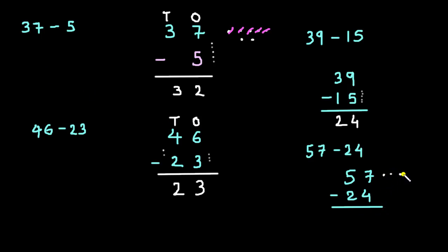Drawing 7 dots: 1, 2, 3, 4, 5, 6, 7. And cut 4 dots: 1, 2, 3, 4. We are left with 3. So, answer is 3. 7 minus 4 is equal to 3. Now, 5 minus 2. Drawing 5 dots: 1, 2, 3, 4, 5. And cut these 2: 1, 2. We are left with 3. So, again, we have 3 at 10's place. So, 3 at ones place, 3 at 10's place. Answer is 33. 57 minus 24 is equal to 33.